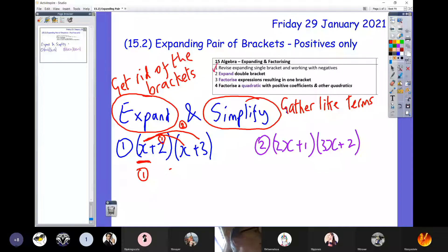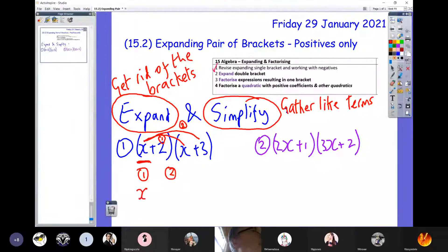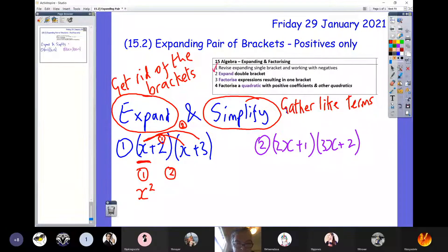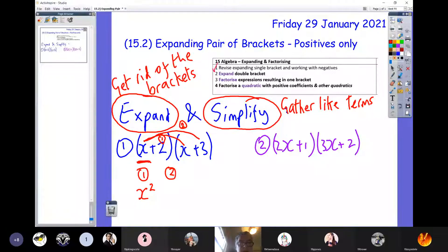Let's call those claw one and claw two. When we did claw one, it was x times x, which is x squared. Claw number two was the x over to the plus three. What is x multiplied by plus three? That's plus 3x. That's similar to yesterday really.